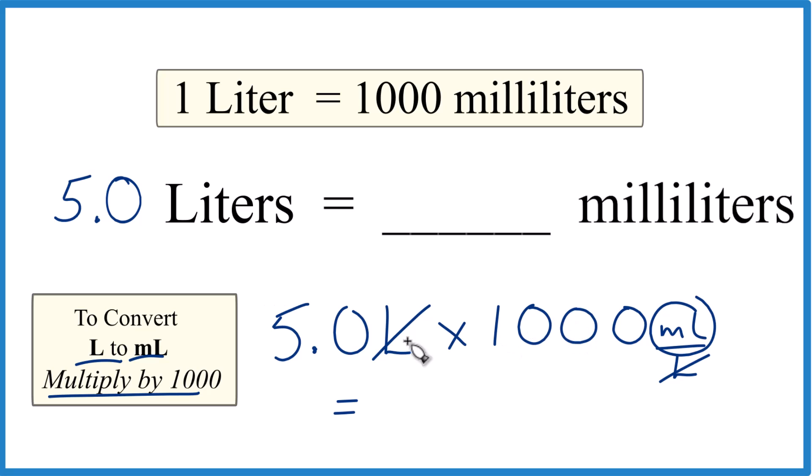5.0, or 5 times 1,000, is 5,000. And again, those units are milliliters.